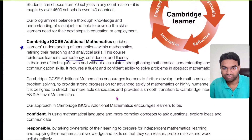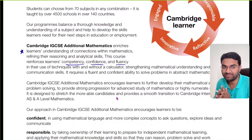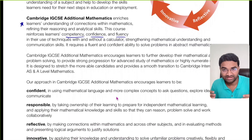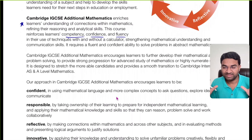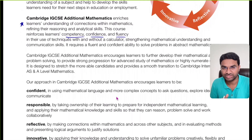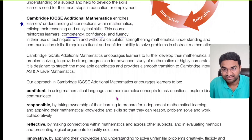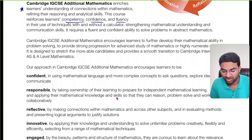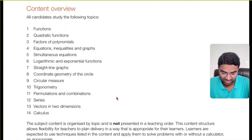Before jumping into the subject content, let's discuss why you should choose Additional Mathematics. It provides in-depth knowledge of mathematical skills and strengthens your understanding of maths. Those who are good in analytical abilities have more of an edge in getting jobs. Additional Mathematics encourages further development of mathematical ability to solve problems. The whole syllabus content has 14 topics.